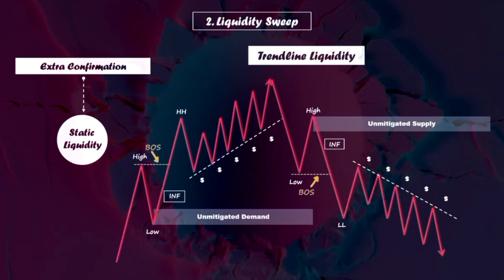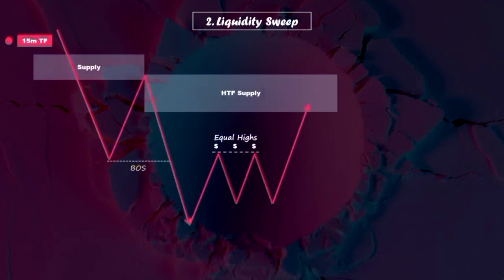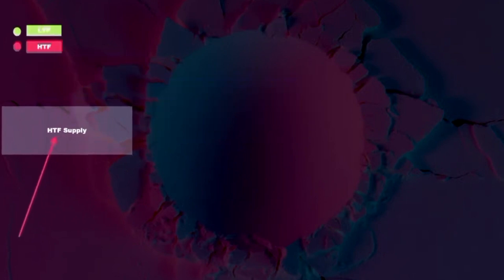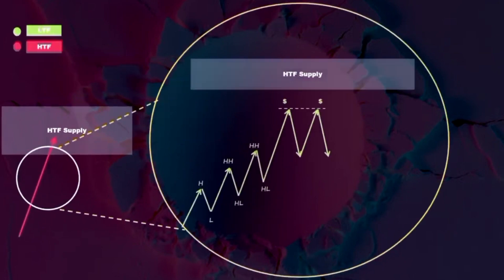Imagine we have a structure on the higher time frame, like the 15-minute time frame. The price is in a downtrend, having formed a series of break of structures to the downside. After tapping into the previous supply zone, the price reversed and created an unmitigated supply zone awaiting mitigation. Now the price is pushing to the upside. Zooming into a lower time frame like the 1-minute time frame, we see that the price has formed a series of higher highs and higher lows on its path toward the 15-minute time frame supply zone.